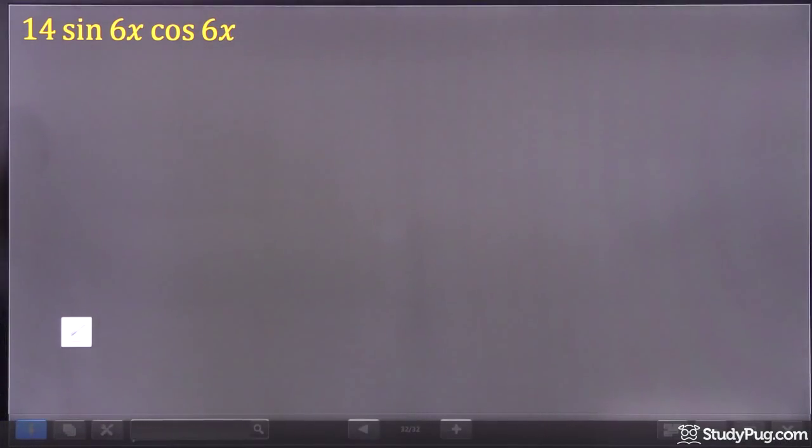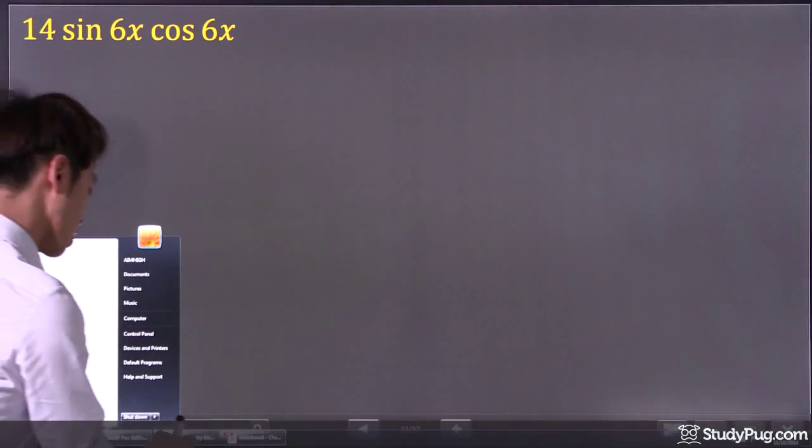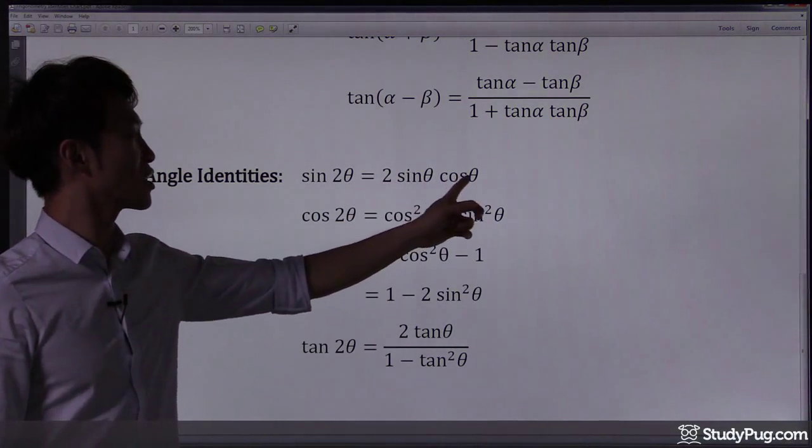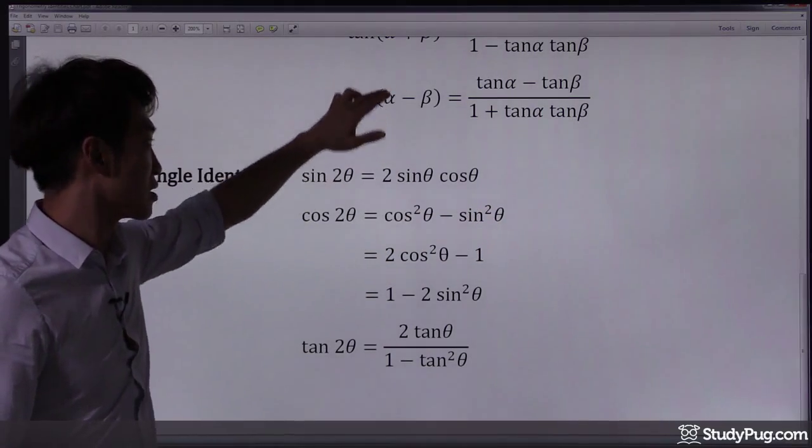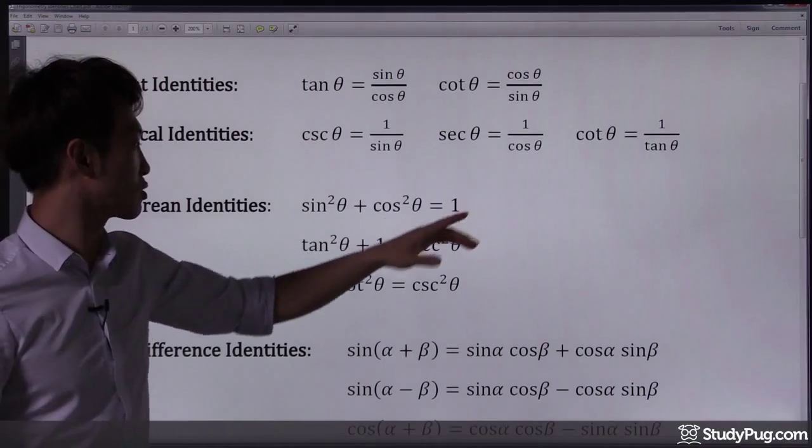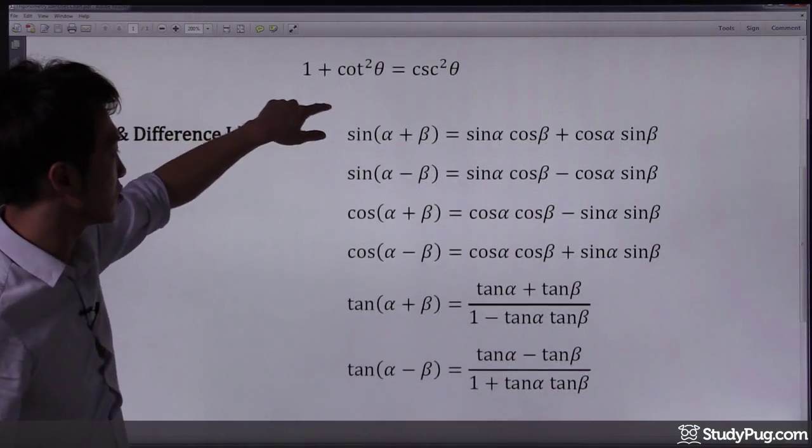Now, coming back to this question. So here, we have a number, sine, cosine. Guys, if you look at the trigonometry identity chart, a number, sine, cosine. Well guys, there's nowhere else you will see that. A number followed by sine, cosine. You don't see that anywhere else.